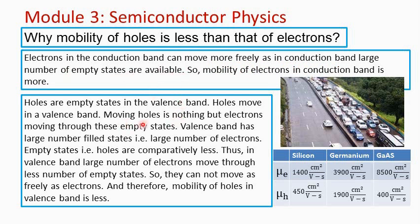Now what happens in the valence band? In the valence band, holes are the empty states, and holes move through the valence band. Moving holes is nothing but electrons moving through these empty states. Now the valence band has a large number of filled states — it is defined as the uppermost filled energy band. When electrons get excited from the valence band to the conduction band, some holes are created in the valence band.